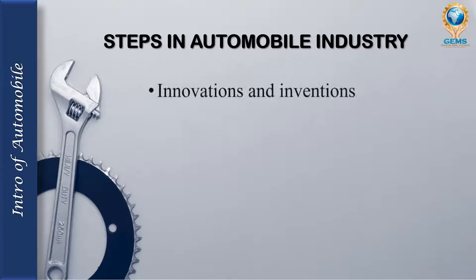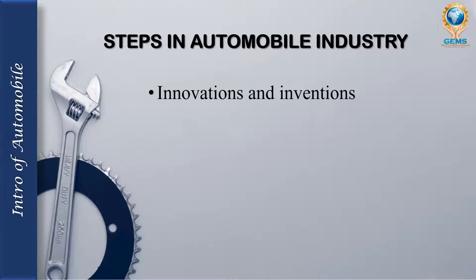What are the steps in the automobile industry? The first step is innovation and invention — identify something new, think of something, invent it, and apply it. If you want changes in an engine, clutch, or gearbox, try it; if successful, it becomes a new design. In every car today, there will be small changes that come out as new designs — that is innovation and invention.